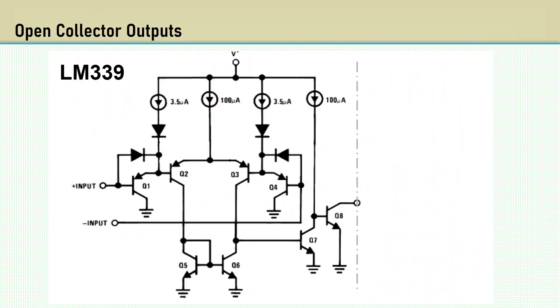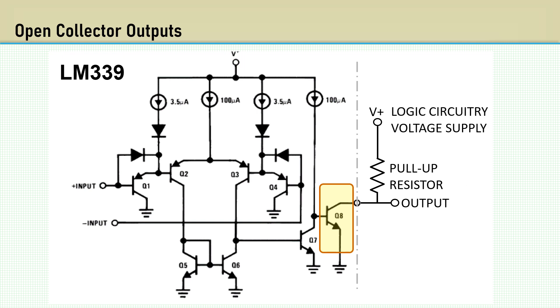One thing to mention right up front is that many comparators have an open collector output that requires a pull-up resistor. That accomplishes two things. One, the pull-up resistor can be connected to the logic circuitry voltage supply so the output is compatible with that logic family.